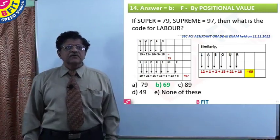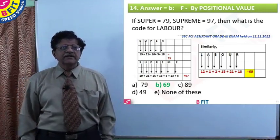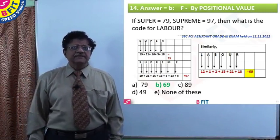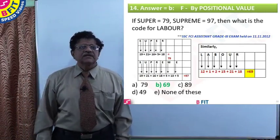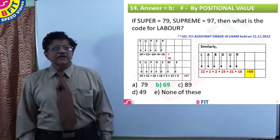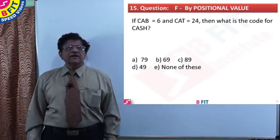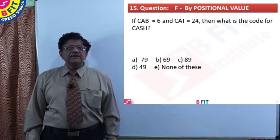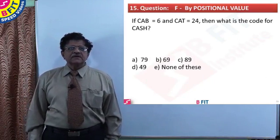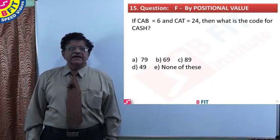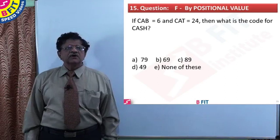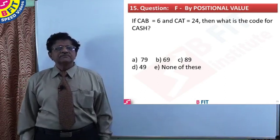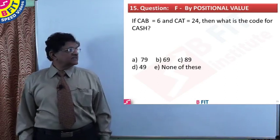The answer for question number 14 is option B, 69. Now let us look into the next question — question number 15. If CAB is 6 and CAT is 24, what is the code for CASH? Let us see the working.